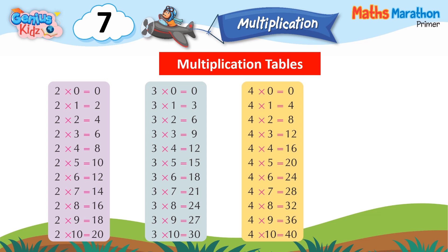4 into 0 is equal to 0. 4 x 1 is equal to 4. 4 x 2 is equal to 8. 4 x 3 is equal to 12. 4 x 4 is equal to 16. 4 x 5 is equal to 20. 4 x 6 is equal to 24. 4 x 7 is equal to 28. 4 x 8 is equal to 32. 4 x 9 is equal to 36. 4 x 10 is equal to 40.